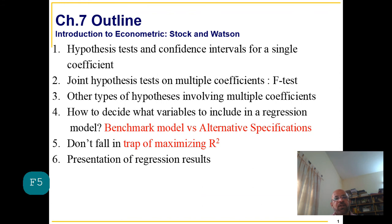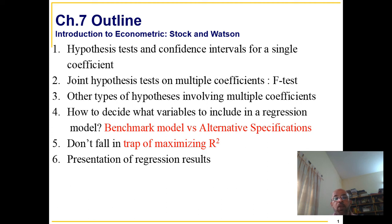Welcome to Chapter 7, Introduction to Econometrics by Stock and Watson. The outline for this chapter covers hypothesis testing and confidence intervals for a single coefficient, joint hypothesis testing, why we should not apply t-tests on joint hypothesis tests, what happens to the level of significance if we do a t-test instead of an F-test, and what numbers we should report when reporting regression results.